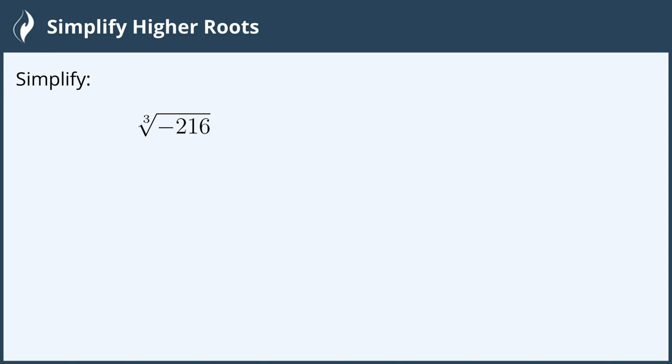The third root, or the cube root, means that I'm multiplying something by itself three different times. Let's go ahead and make a list of cubes.